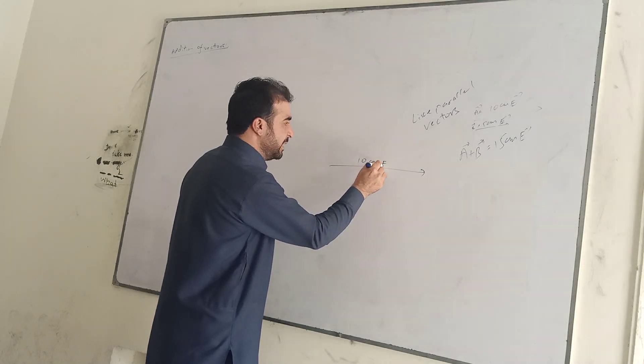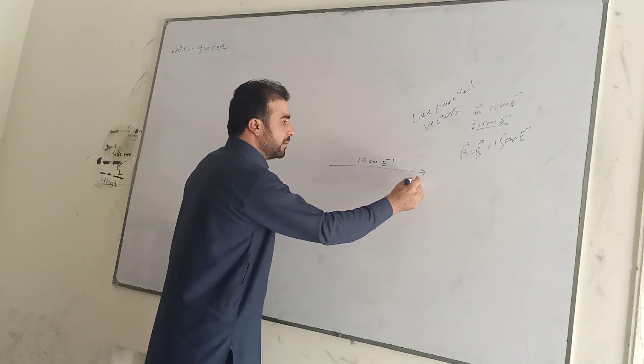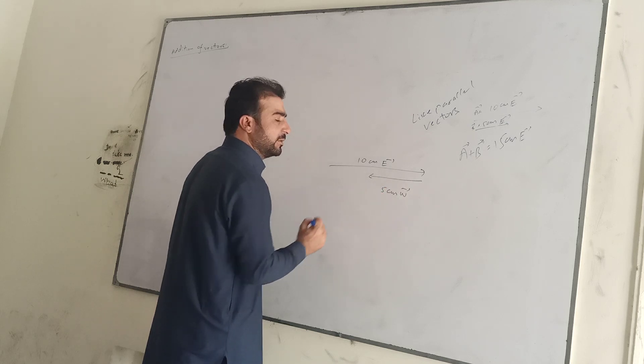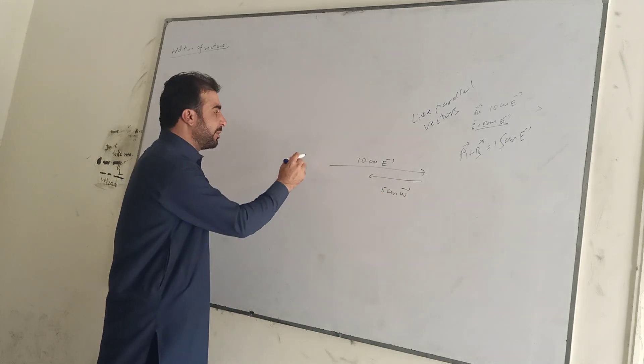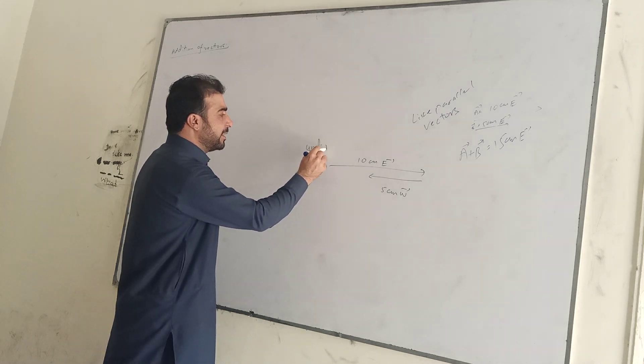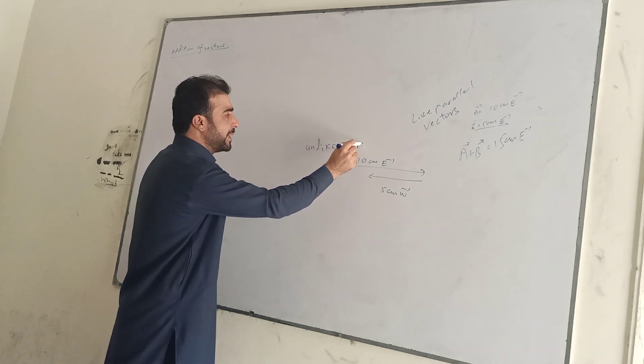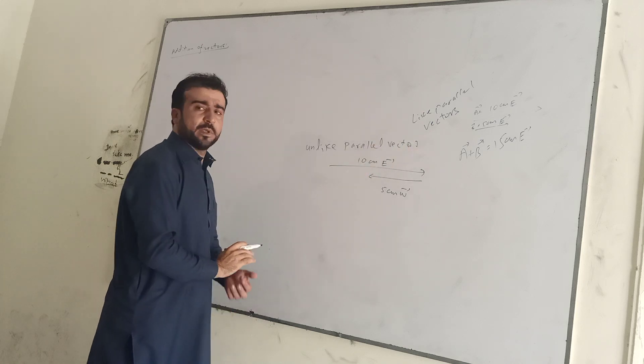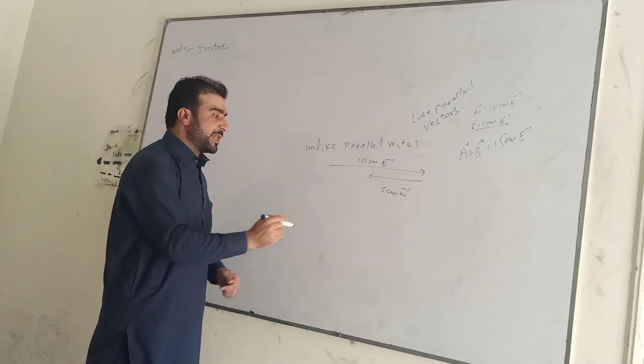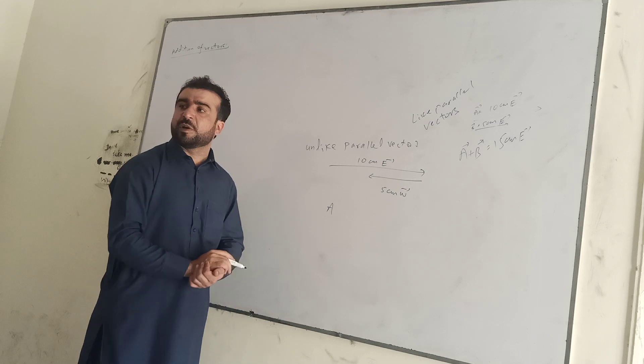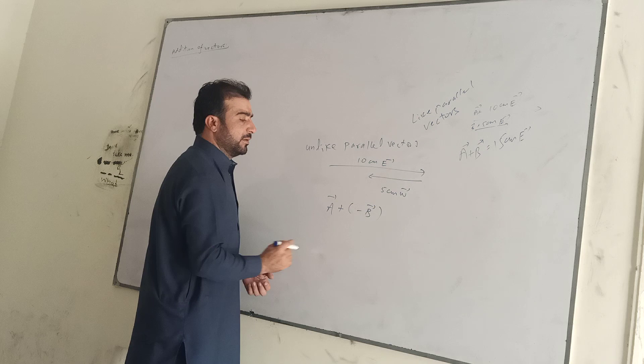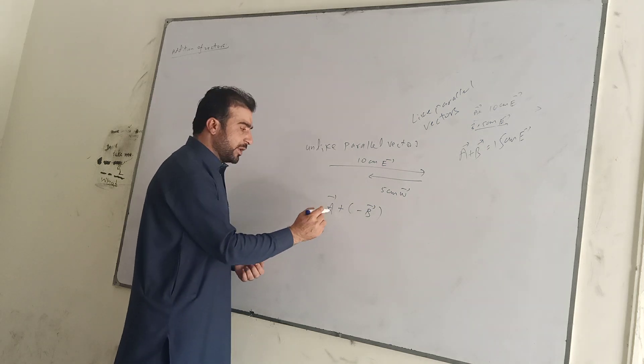A vector of 10 meters towards east and 5 centimeters towards west. This is a vector that I'm going to show you - unlike parallel vectors. The algebraic addition means a plus or minus, beyond the scalar a plus minus B.